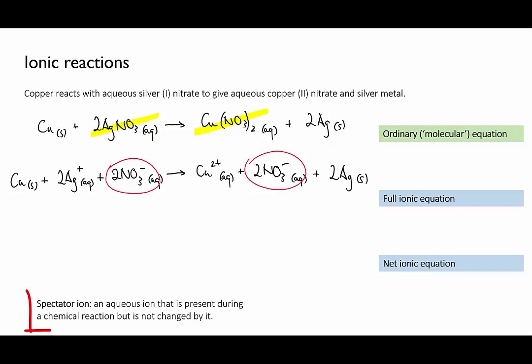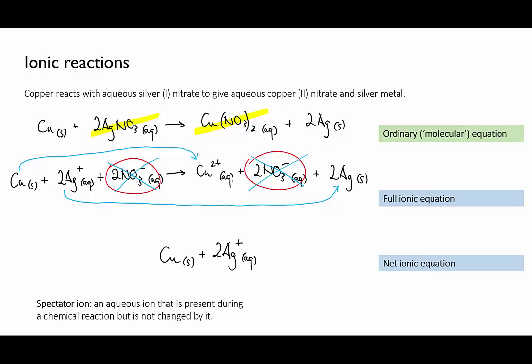We call this type of ion a spectator ion. It's there, present, watching if you like, but it doesn't actually take part in the reaction. The other species do take part. The copper goes from neutral copper atoms, the metal, to copper ions and the silver ions from the silver nitrate turn into neutral silver metal. So in order to get to the bottom of this reaction we can cross out the nitrates since they aren't changed and we just show the essence of what's going on.